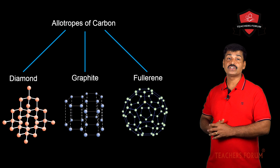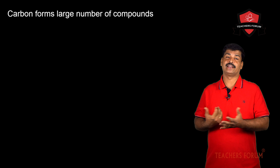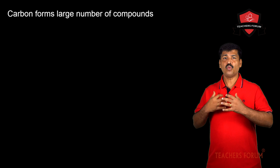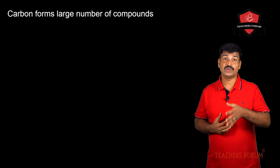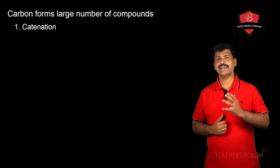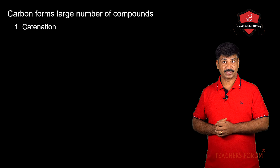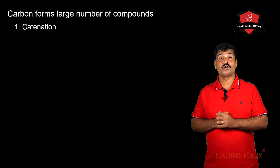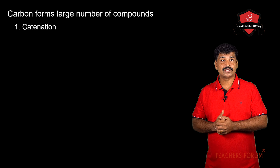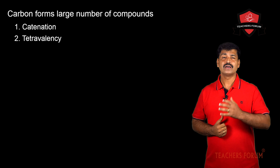Carbon forms a large number of compounds by combining with other carbon atoms and with other elements — there are millions of compounds in nature that contain carbon. This is because of two reasons. The first is catenation: carbon can combine with other carbon atoms to form long chains, branched chains, or ring structures. This ability of carbon to form bonds with other carbon atoms is known as catenation.